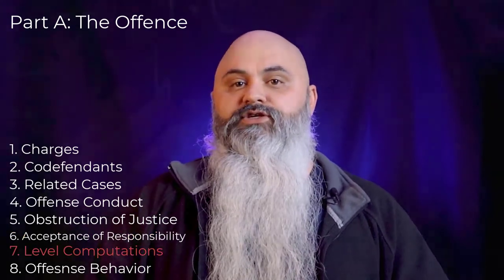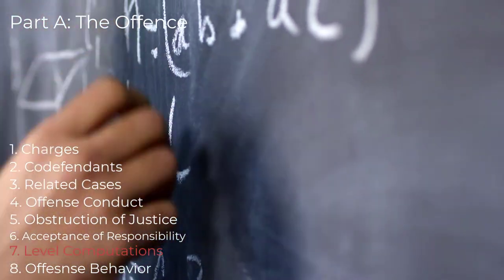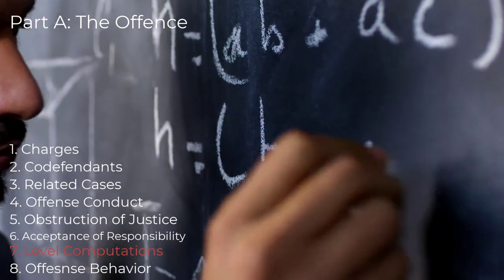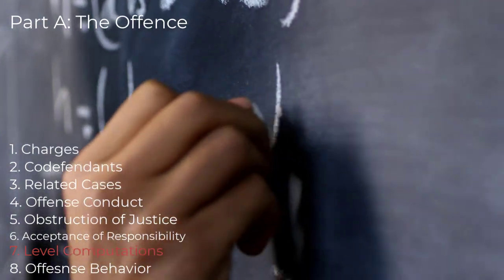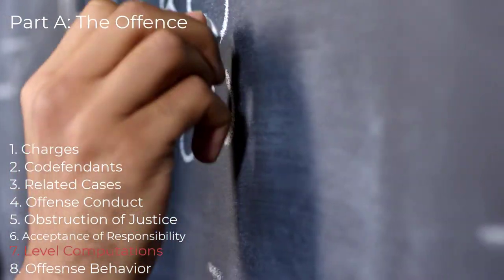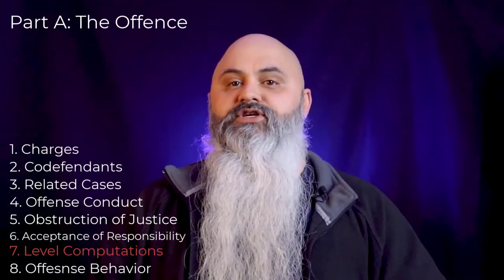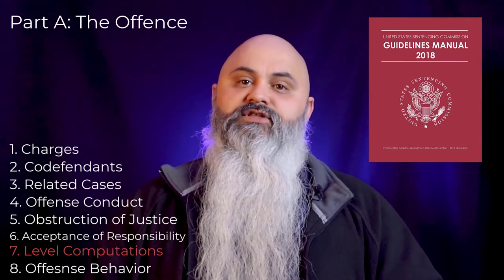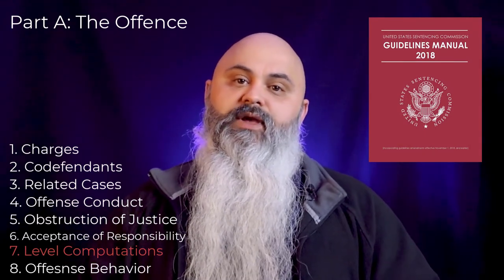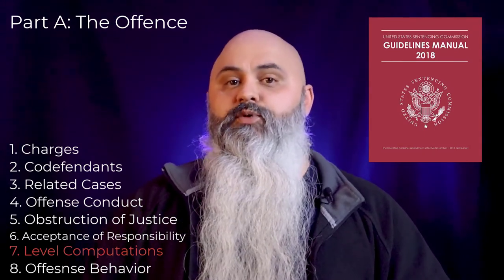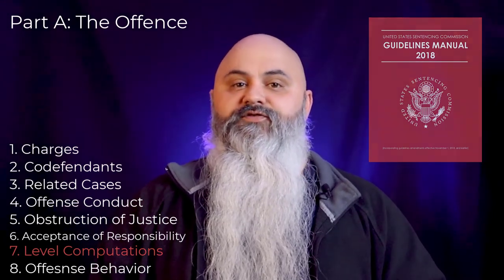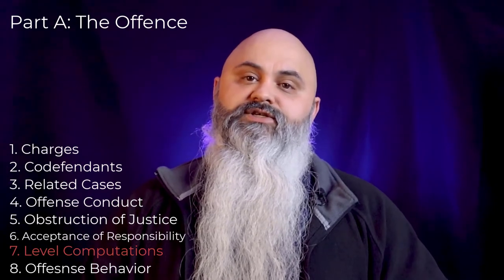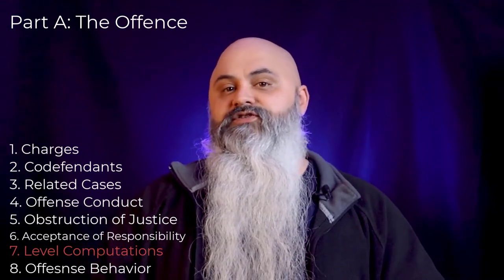Offense level computations. Mathematical formulas that determine the sentence guideline range, determined by the United States Sentencing Guidelines. This is the section where the probation officer applies a combination of his findings from the investigation and the sentencing range that the federal sentencing guidelines recommend. On occasion, the probation officer arrives at a sentence that differs from the range agreed upon by the prosecution and the defense. The sentencing judge makes the final decision.